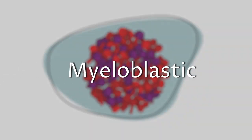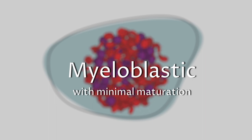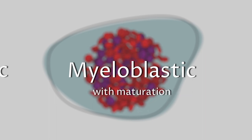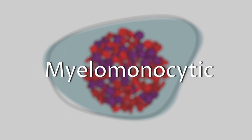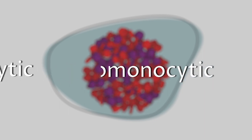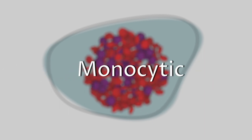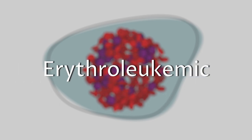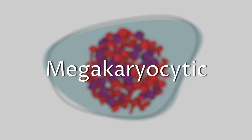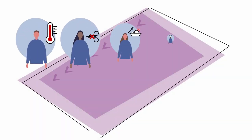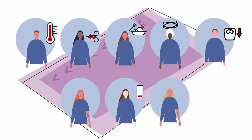There are eight main subtypes of AML, depending on which cell the leukemia came from. While all subtypes upset normal blood cell levels, different types of AML are associated with certain symptoms and behave differently after treatment.